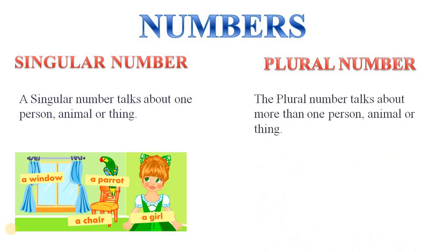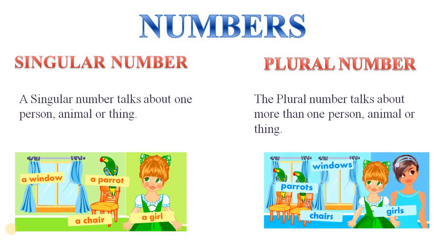Plural number talks about more than one person, animal or thing. In this picture, you may see that everything is more than one — like two girls, two windows, two parrots and two chairs, etc. All of them are more than one in numbers, so they all are plural.